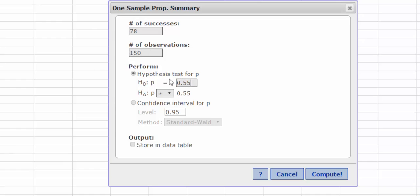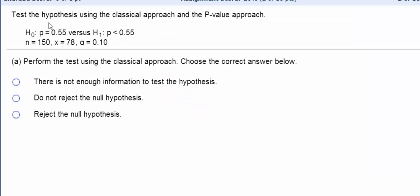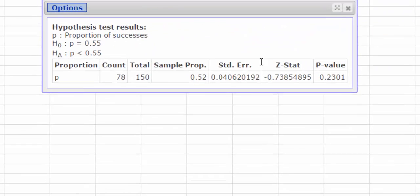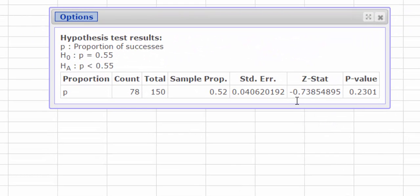It was 0.55, and this was a left-tailed test, p was less than 0.55. And I think that's all we need. So I press Compute, and it looks like my test statistic is negative 0.7385. I'm going to write that down.